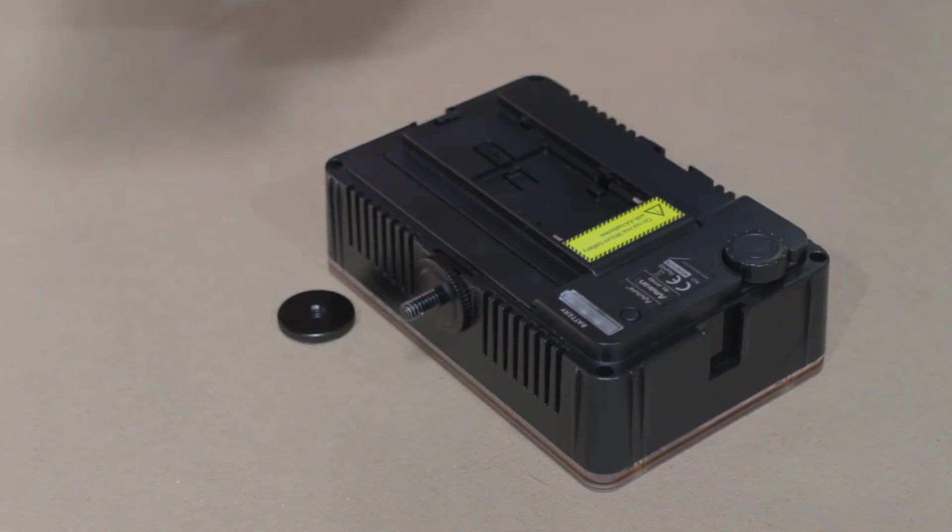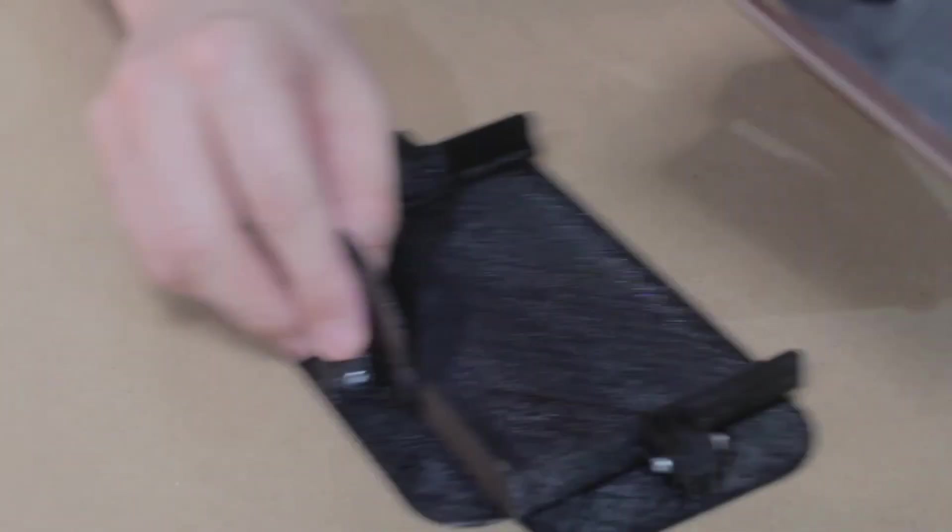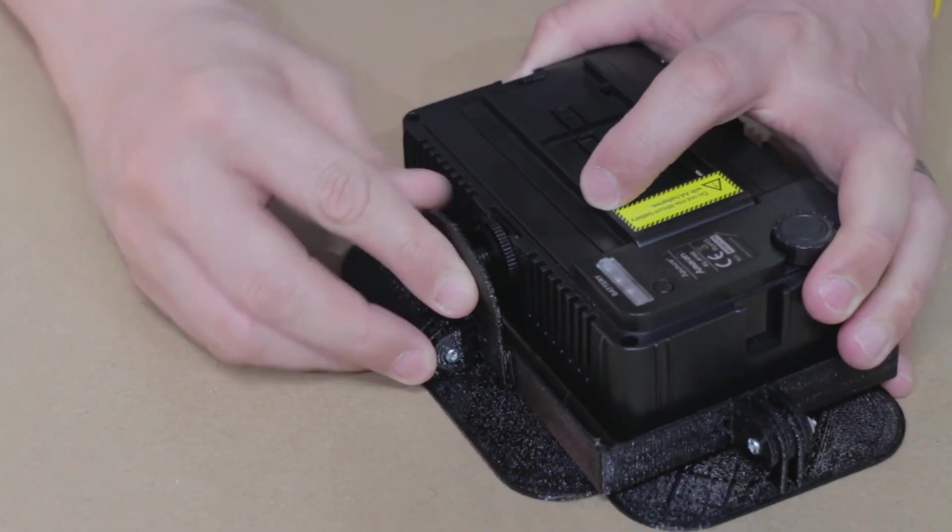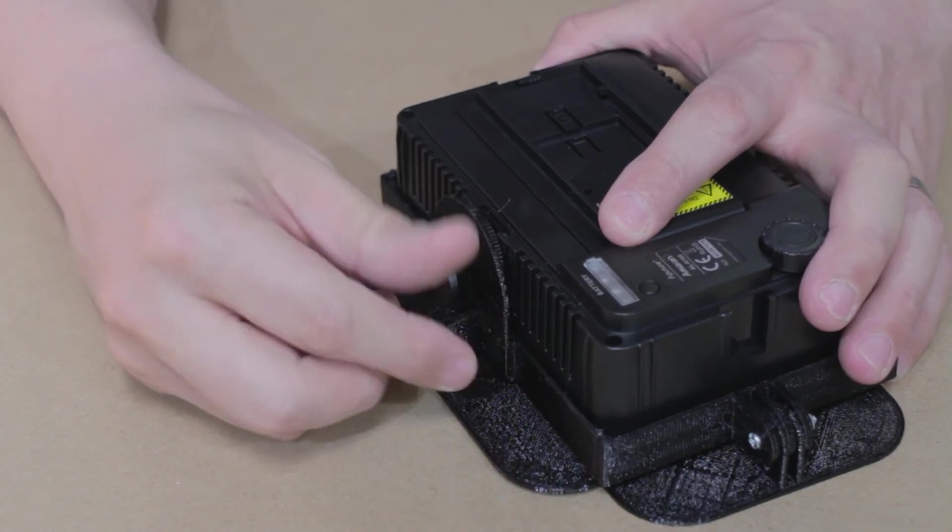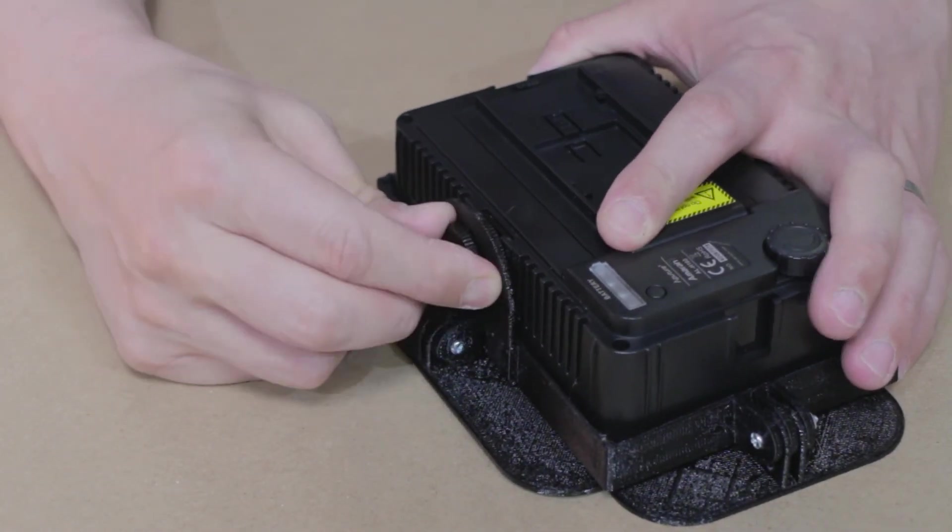And then you can put your frame on it like this. And then this just screws down, and now it's tight on your light.